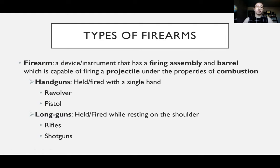There are two types of firearms we're going to discuss: handguns and long guns. Handguns can be fired with a single hand or with two — these are your revolvers and pistols. Long guns are held or fired while resting on your shoulder — these are your rifles and shotguns.